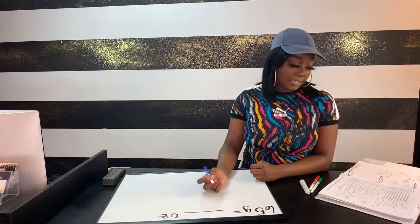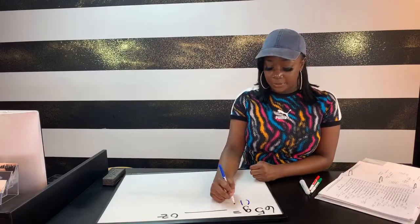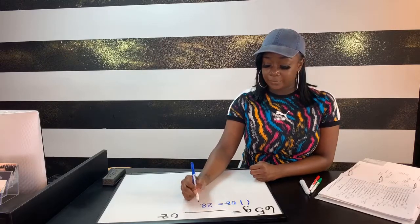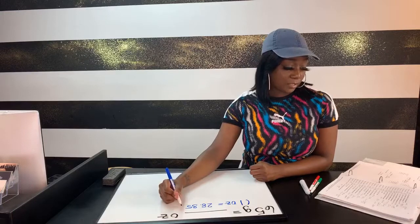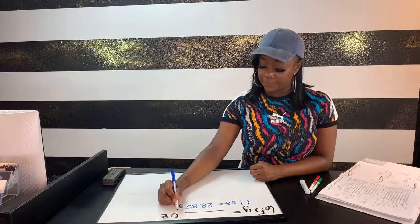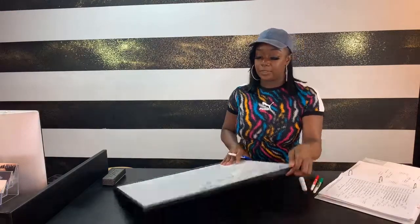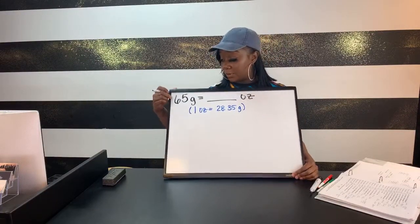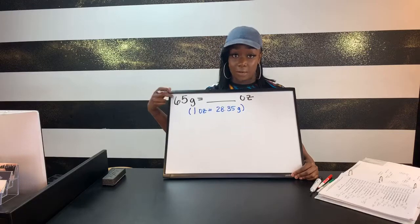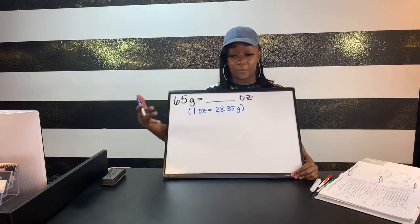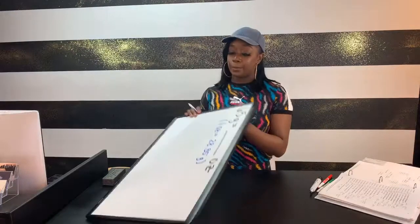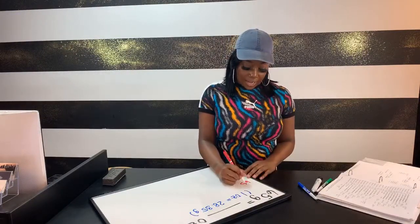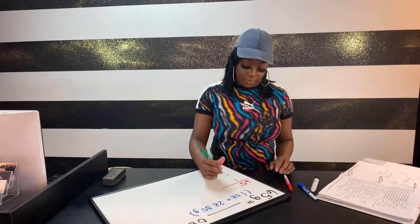The next question says 65 grams is how many ounces, and the key says one ounce is equal to 28.35 grams. First thing: we always write what they give us first. We can write it as a ratio over one to make it a fraction. So I know that I have 65 grams to start with.